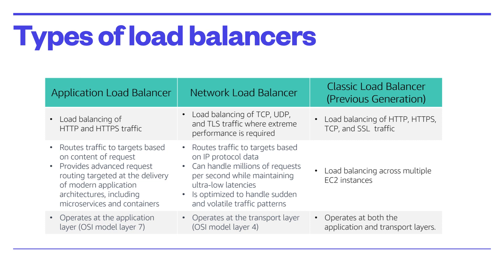The second type is a network load balancer. It operates at the network transport layer, routing connections to targets like EC2 instances, microservices, and containers based on IP protocol data. It works well for load balancing both TCP and UDP traffic. A network load balancer is capable of handling millions of requests per second while maintaining ultra-low latencies, and is optimized to handle sudden and volatile network traffic patterns.